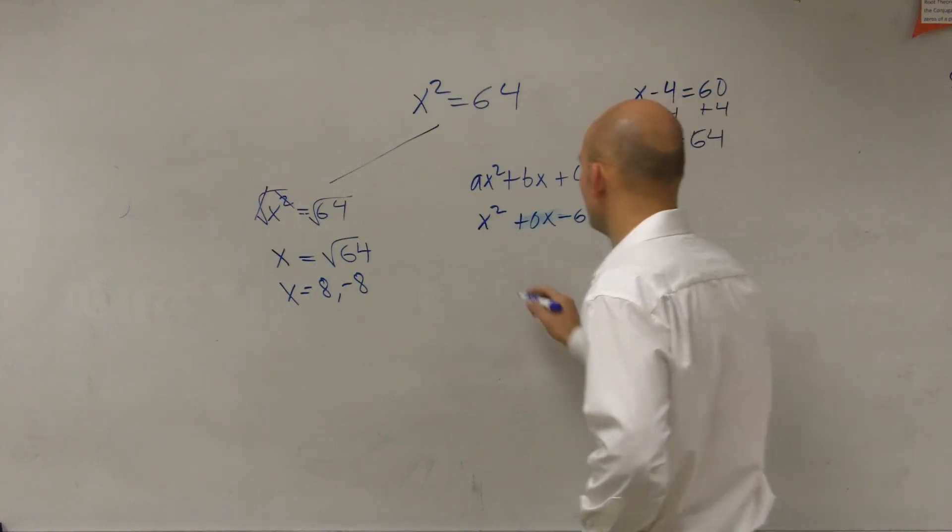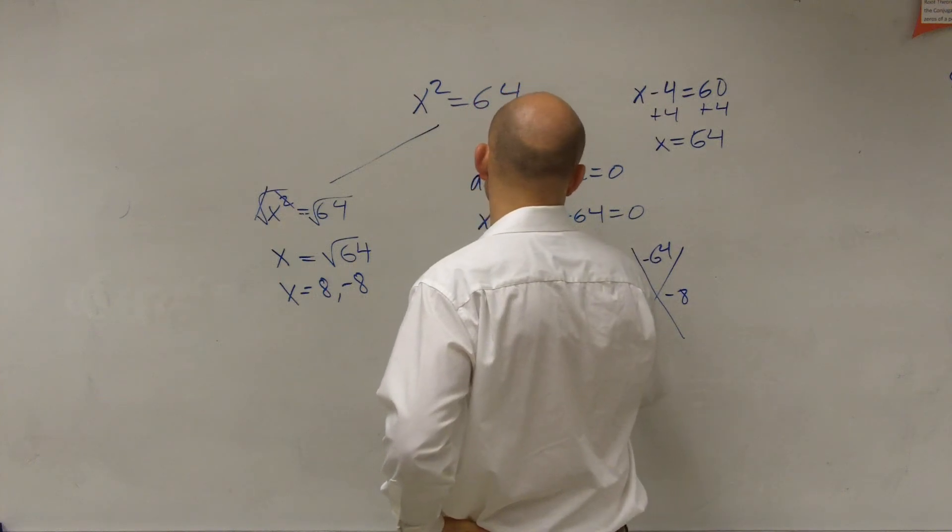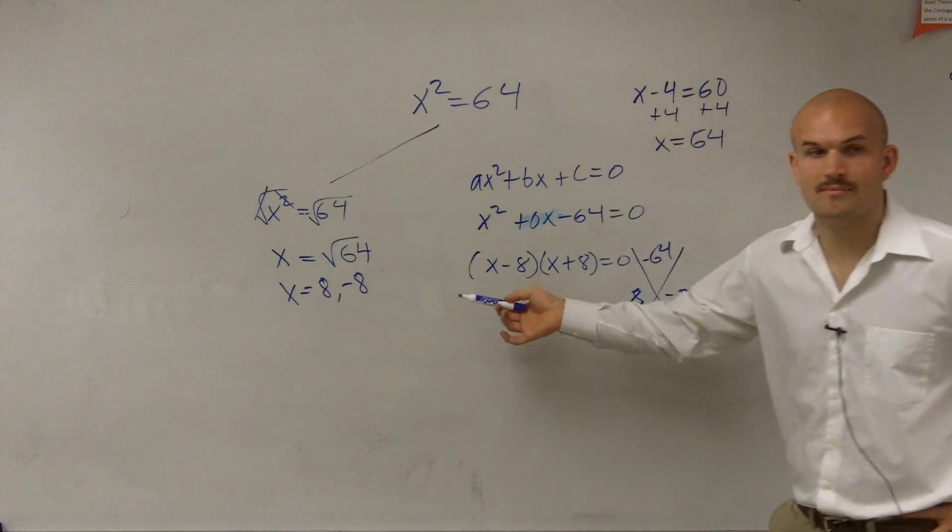8 and negative 8. So therefore, we wrote this as a product x minus 8 times x plus 8 equals 0.